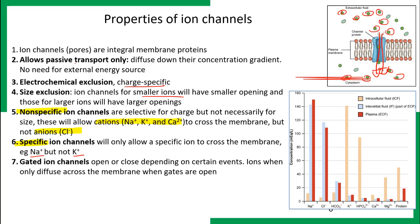Some ion channels are gated, meaning they have a gate that opens and closes. When the gates are open, it allows diffusion of the ion; when closed, it stops the ion from diffusing. There are four different types of gates associated with ion channels — when open, ions can diffuse across the membrane; when closed, they cannot.